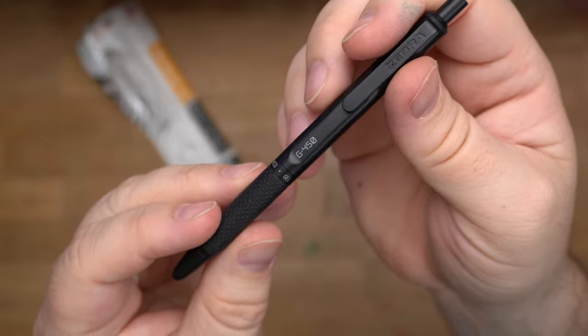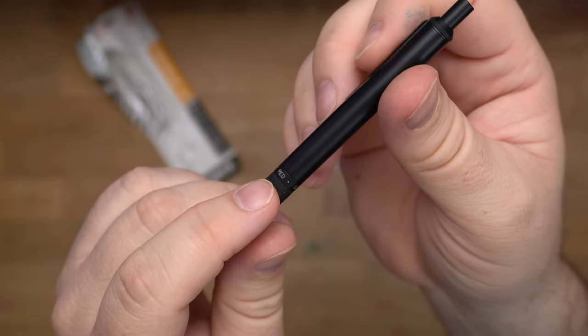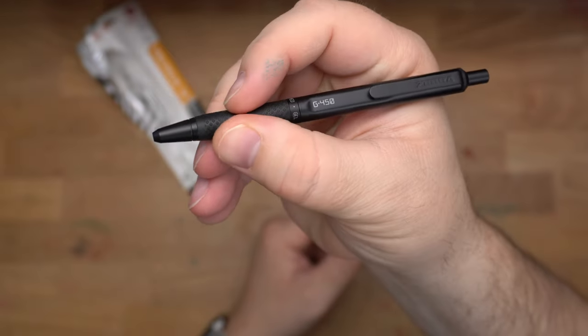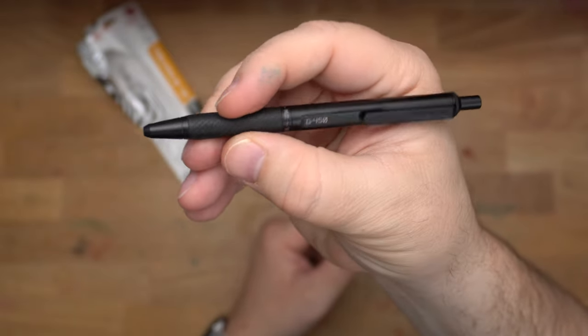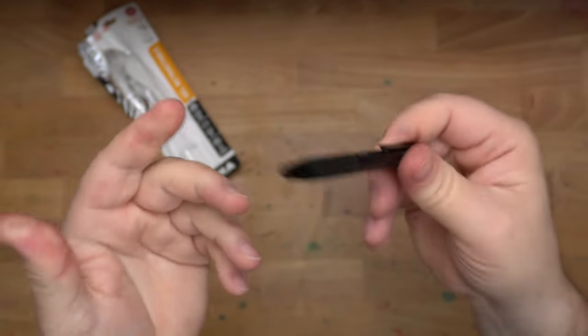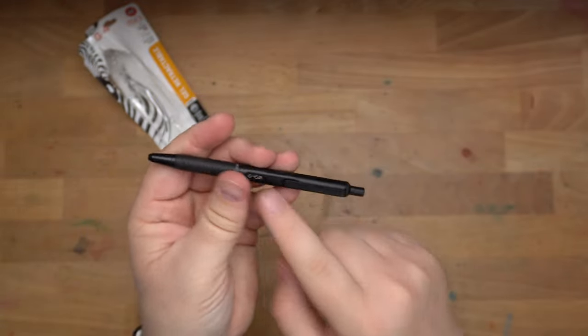But you get this G450 here on the barrel, and then gel, medium, gel, medium around there. And this is a pretty nice rubbery grip. I like that. Some of the other pens I have in this series don't have that rubbery grip, and I quite like that.